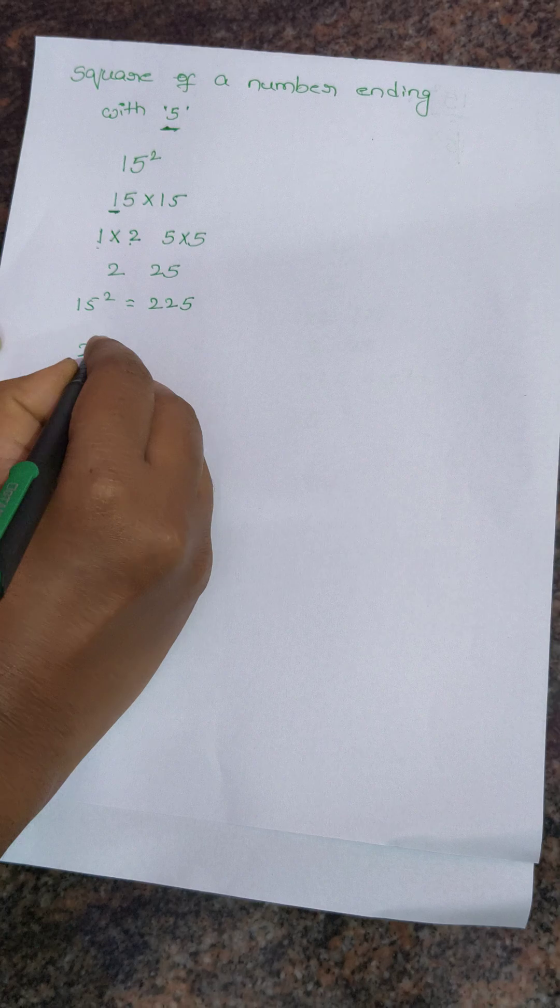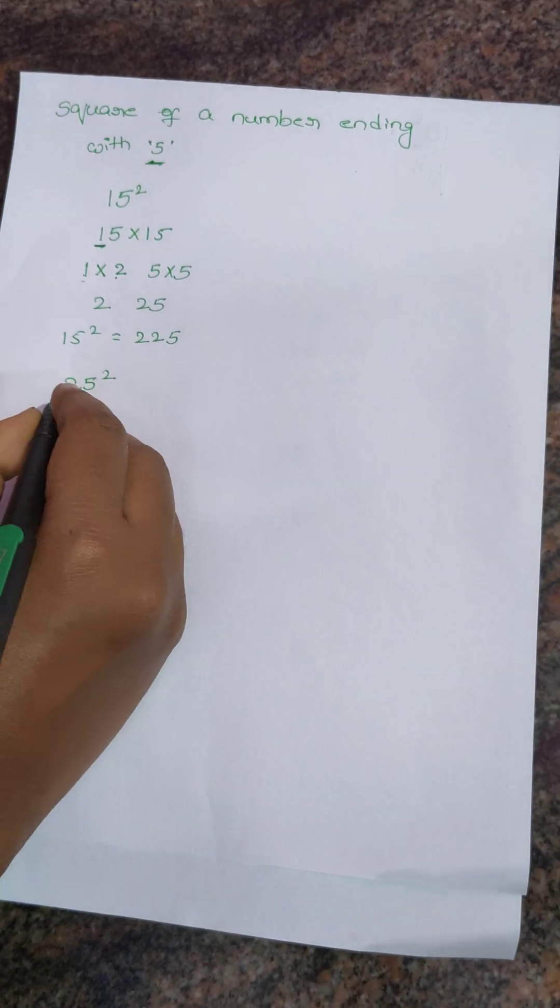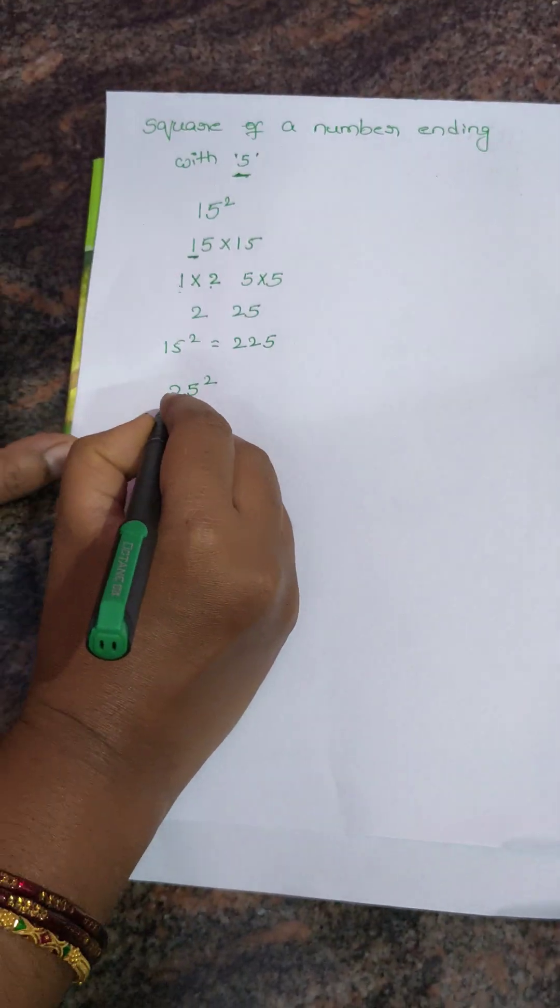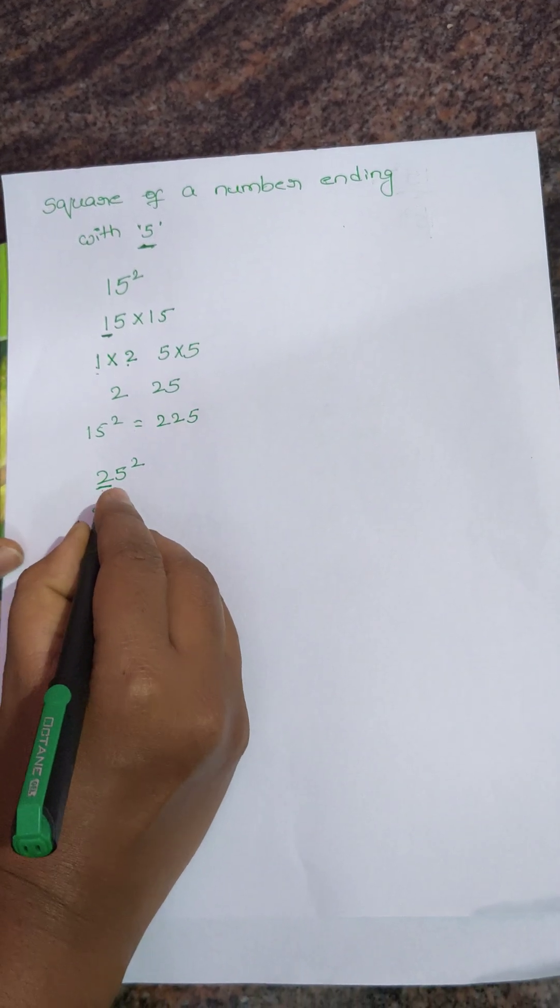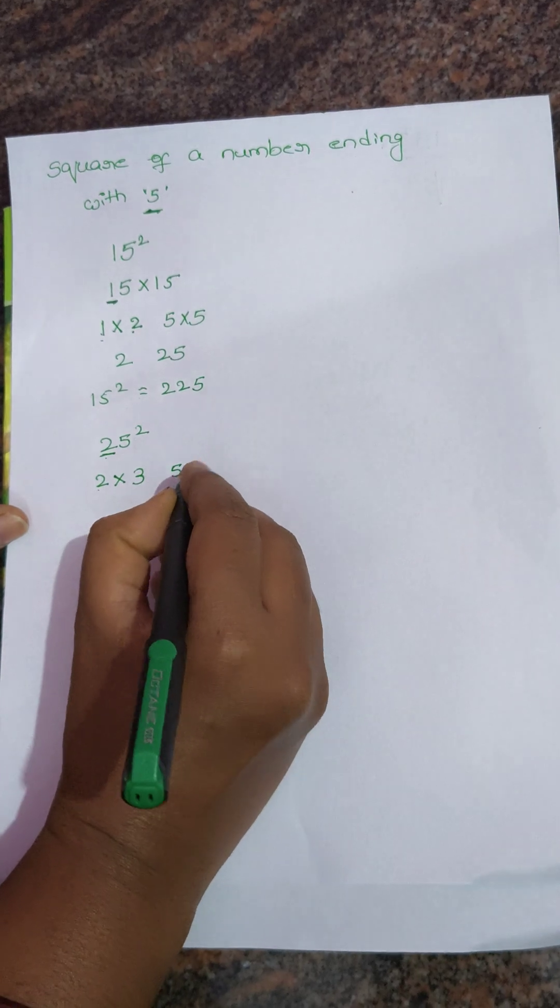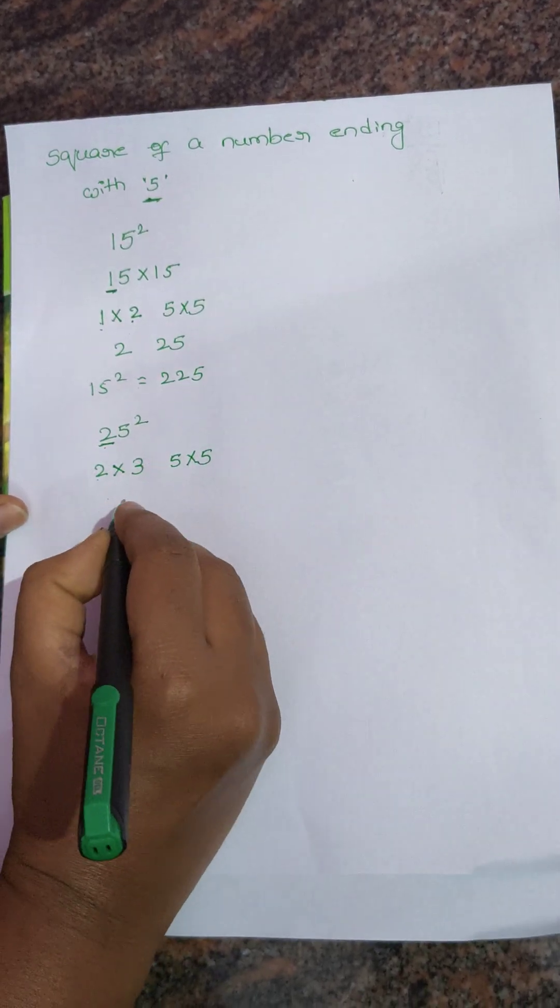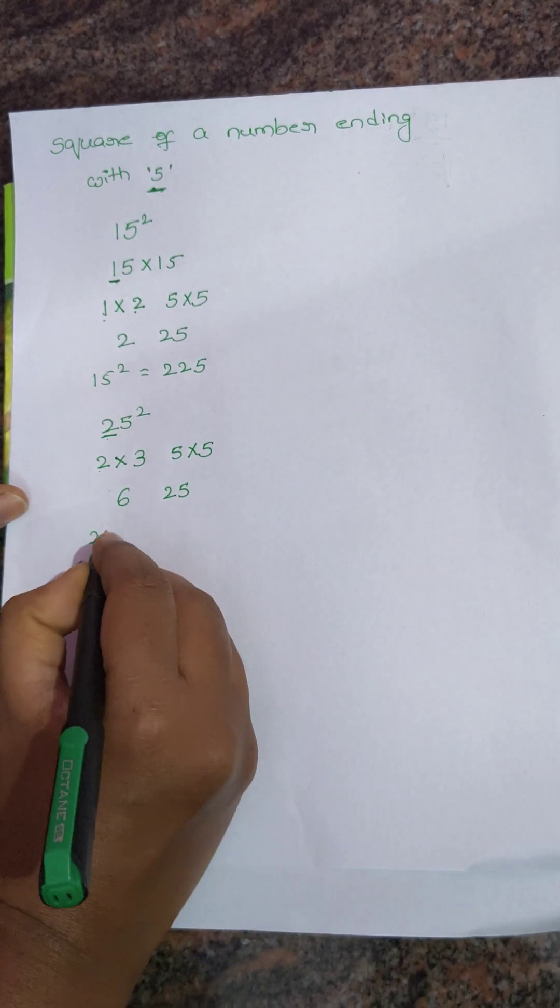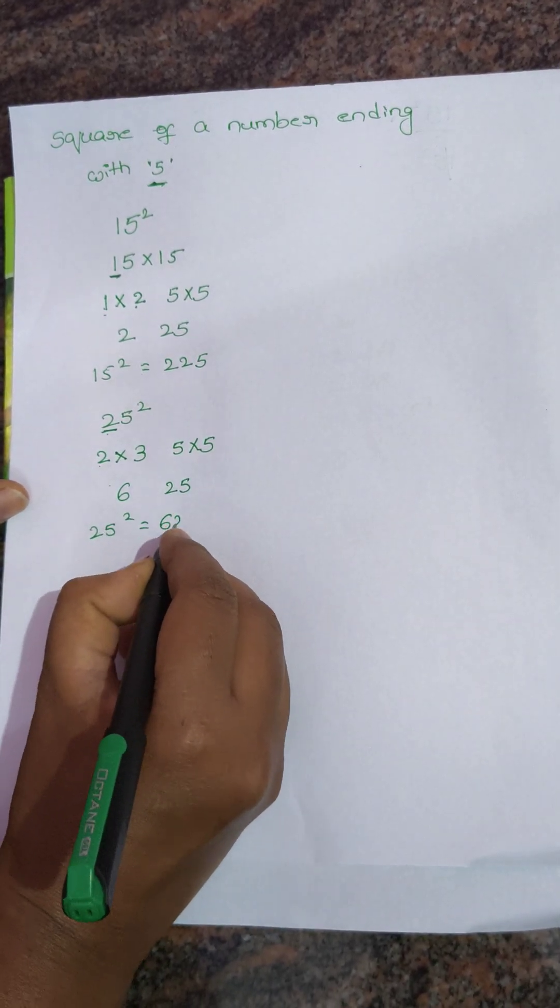Like this, we have to find 25 square. What do we have to do? We have to multiply 2 with its next number. What is the next number of 2? 3. We multiply 2 with 3 and 5 into 5. 2 times 3 is 6, 5 times 5 is 25. 25 square value is 625.